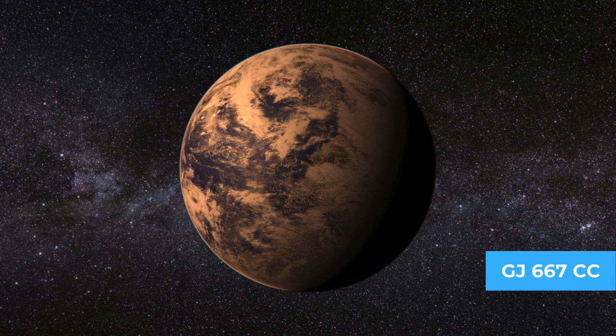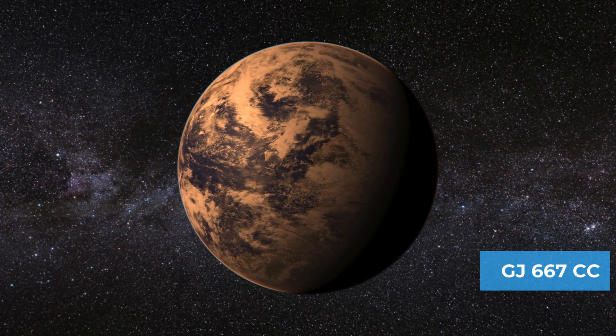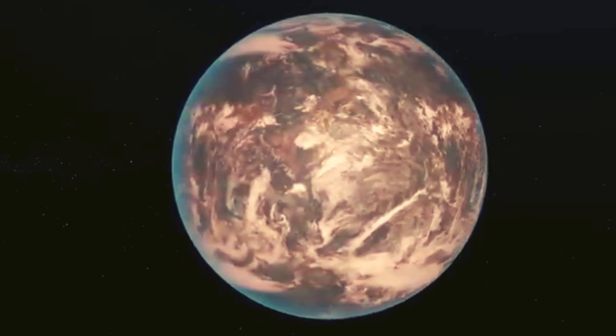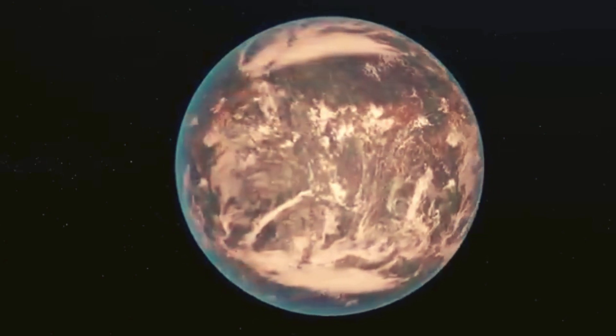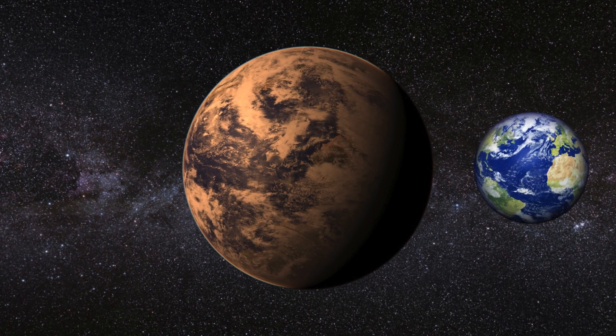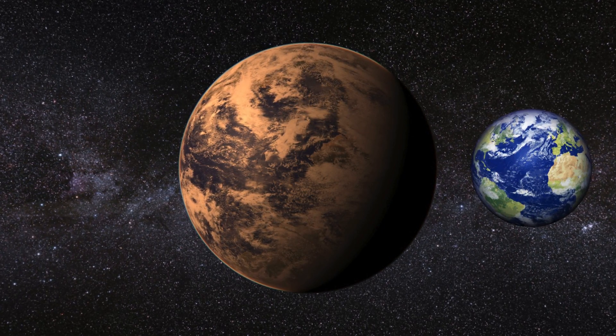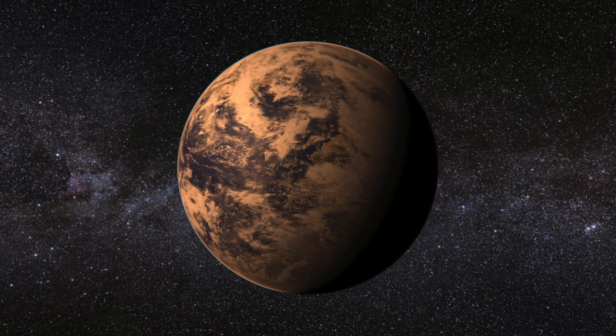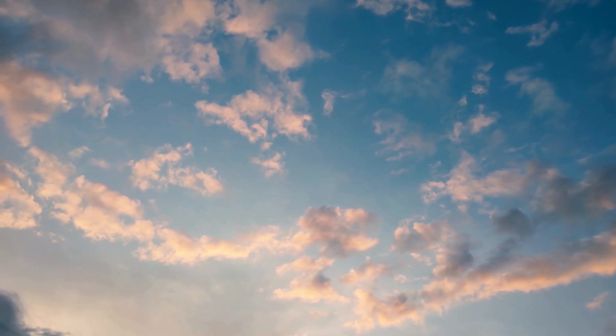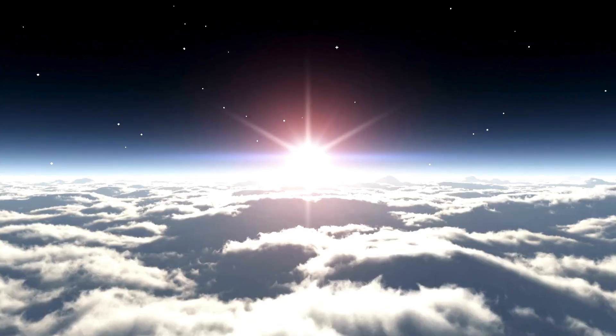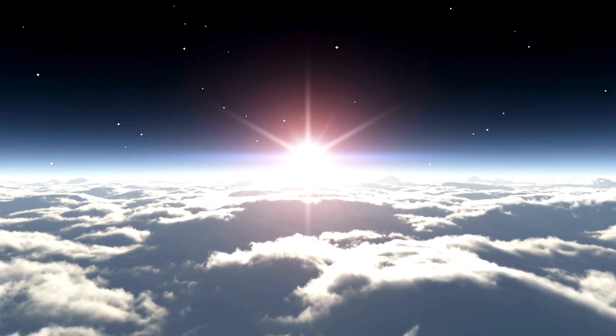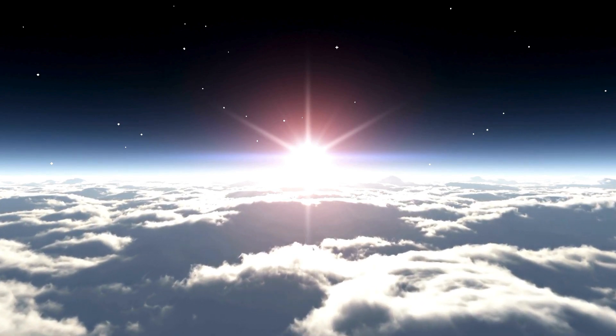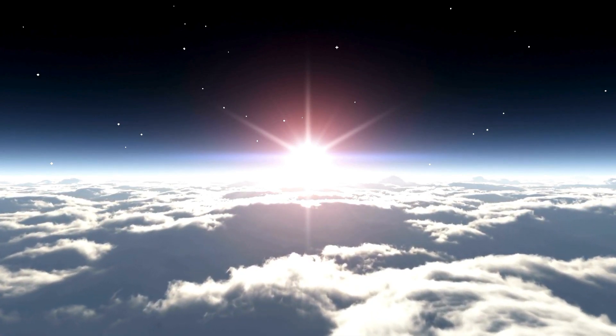GJ 667CC, the second-closest planet, orbits within the inner edge of the star's habitable zone. With a mass roughly 3.8 times that of Earth and a radius 1.8 times that of our home planet, its year lasts a mere 28 Earth days. Sporting an Earth similarity index of 0.85, it is aptly dubbed the 'holy grail' of extrasolar planets.